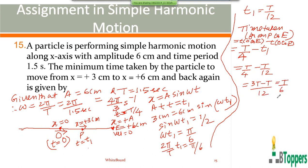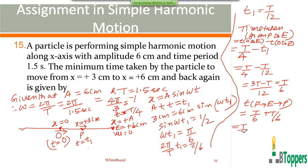The time taken for the particle to move from P (x=3 cm) to the extreme position A (x=6 cm) equals the time from O to E minus the time from O to P, which is T/4 − T/12 = T/6. By symmetry, the time to return from E back to P is also T/6. So the total time from P to E and back to P is T/6 + T/6 = T/3 = 1.5/3 = 0.5 seconds.